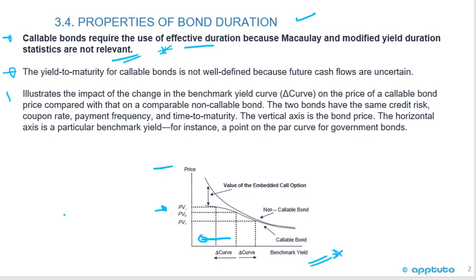The price of a callable bond is less than an option-free bond — we've learned that in previous LOS. If rates decrease, the risk is that the bond will be called because the company can then refinance at a lower rate, and you get your principal back when rates are lower. That's the interest rate risk of callable bonds for the holder.